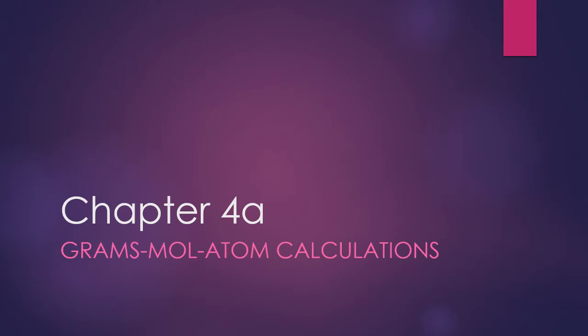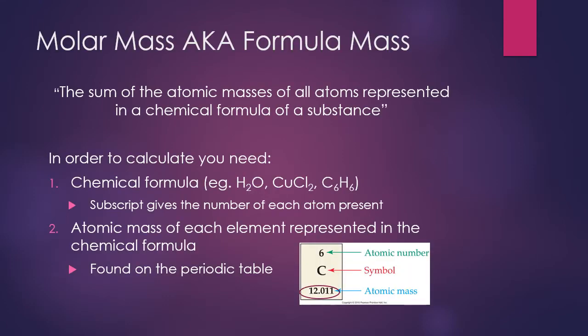Chapter four is all about calculations and chemical equations. We're first going to learn how to calculate the molar mass of a chemical compound — also called formula mass or molecular weight. To do this, we take the sum of the atomic masses of all the atoms represented. The only thing you need is the chemical formula. Examples here include H₂O, CuCl₂, and C₆H₆. The subscripts tell us how many atoms of each element are present in the compound.